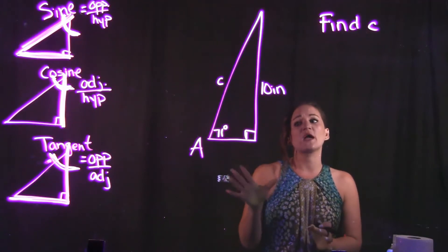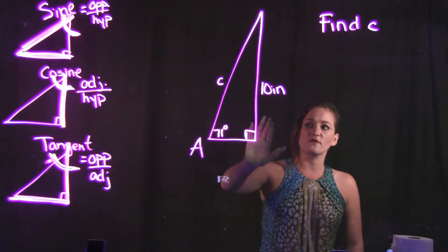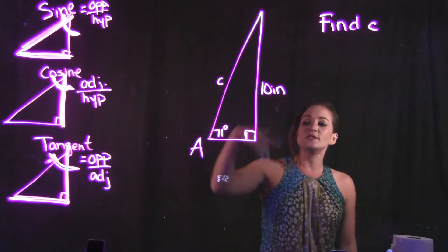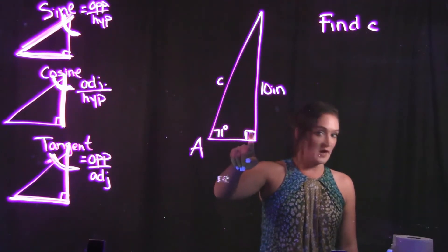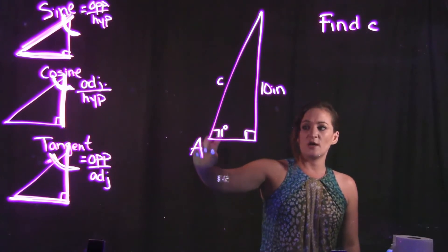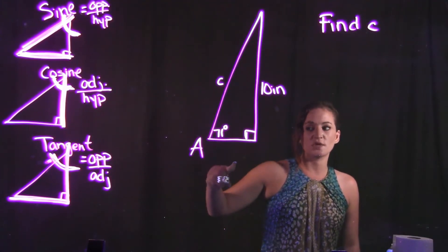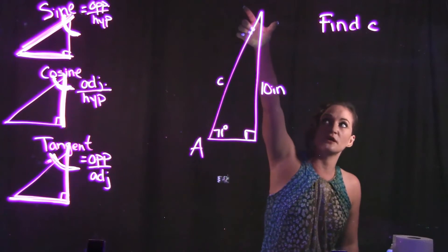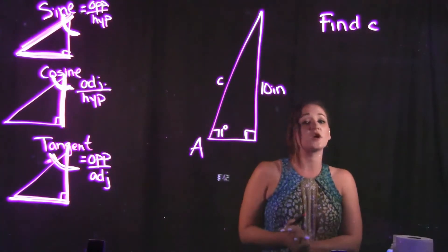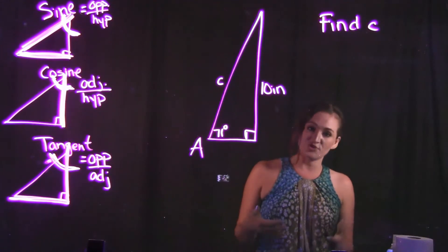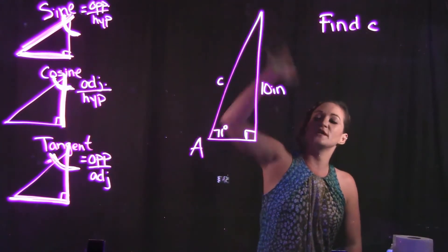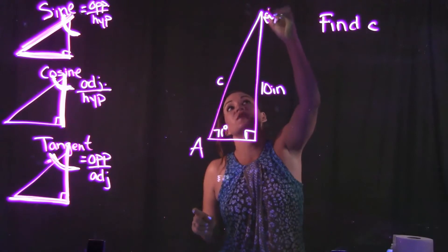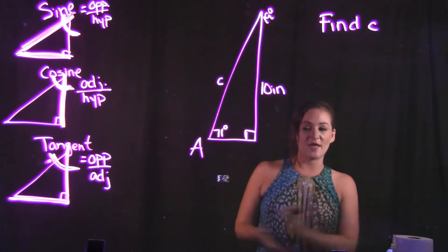For this particular triangle, we're given that the tall side is 10 inches. We don't know the bottom side, and we don't know the hypotenuse labeled C. We do know it's a right triangle, and we're given that this angle is 71 degrees. By process of elimination, we can find the third angle: 180 minus 90 minus 71 leaves us with 19 degrees.